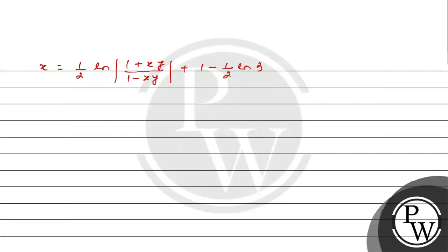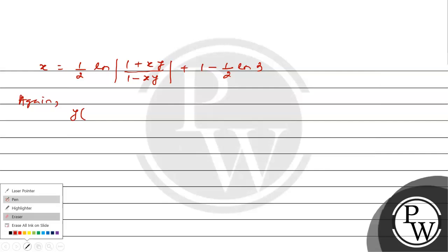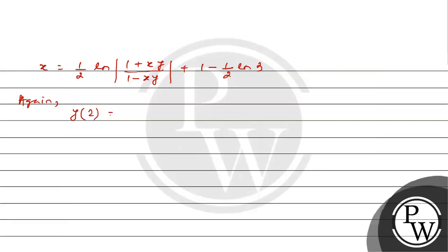Now, we are also given that the line x = 2 intersects the curve y = y(x) at y = alpha. Substituting x = 2 and y = alpha into our equation: 2 = (1/2) ln|(1 + 2α) / (1 - 2α)| + 1 - (1/2) ln 3.